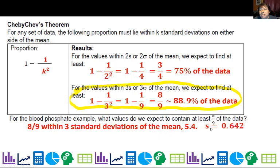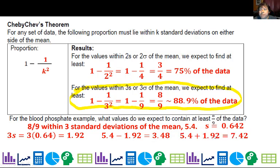Alright. So there's my standard deviation again. Now I have to multiply by three instead of two. So I'm going to go 1.92 below the mean and 1.92 above the mean. So below the mean that takes me down to 3.48, 5.4 minus 1.92.